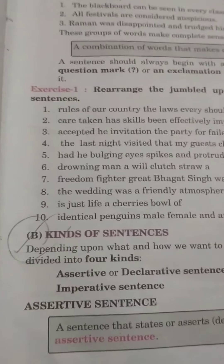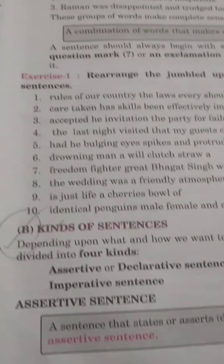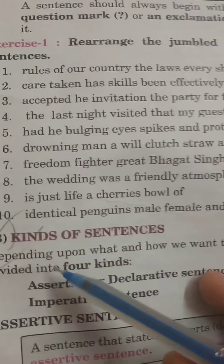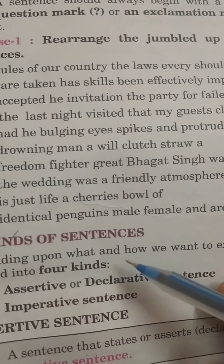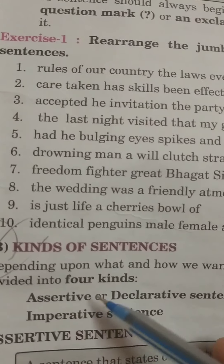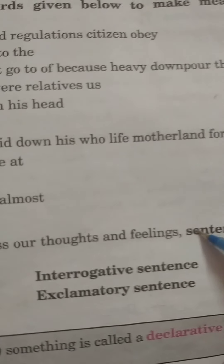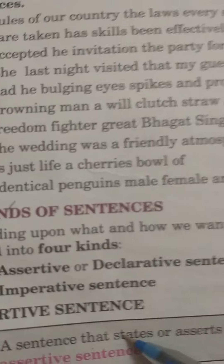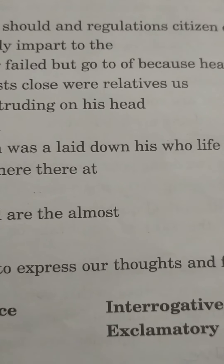Now we come to how many kinds of sentences there are. There are four kinds: first, an assertive or declarative sentence; second, an interrogative sentence; third, an imperative sentence; and fourth, an exclamatory sentence.